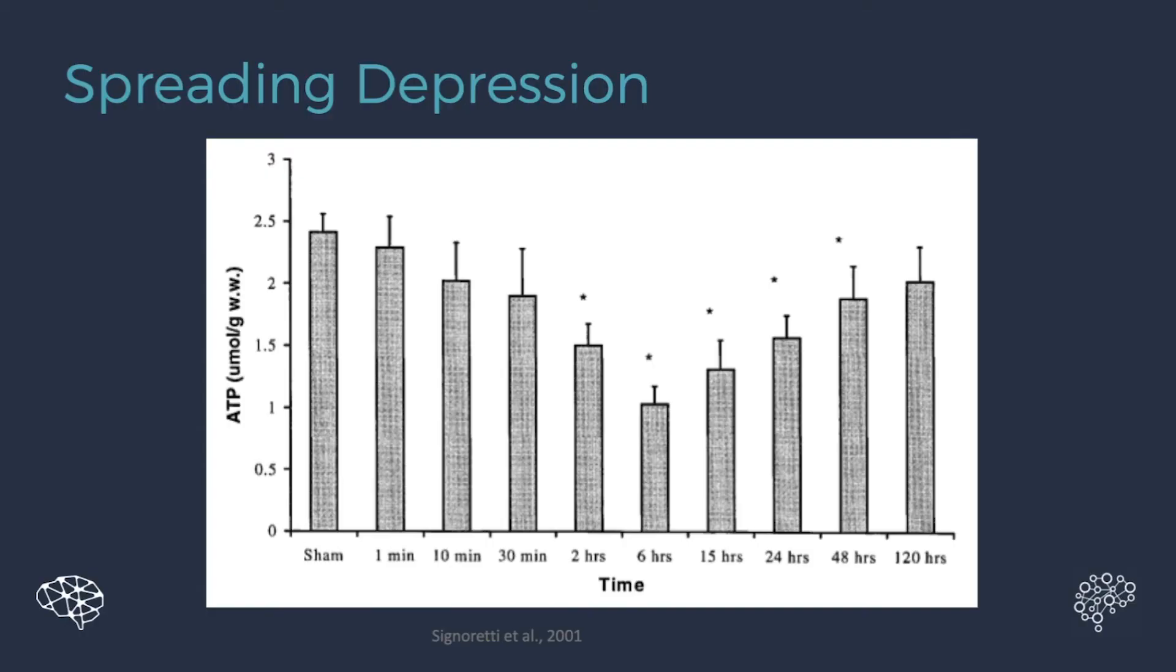So what it looks like is this. So this is an animal study here and you can see here, this is ATP. So this is our energy. This is time. Within one minute, our energy levels are already starting to drop. 10 minutes, 30 minutes, two hours. We hit significant difference. Six hours. We hit our peak low, and then we gradually restore back up.